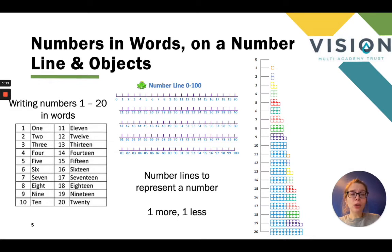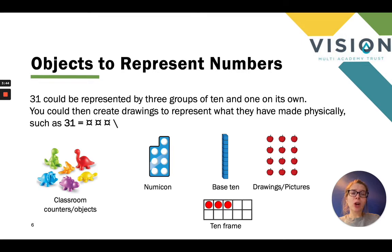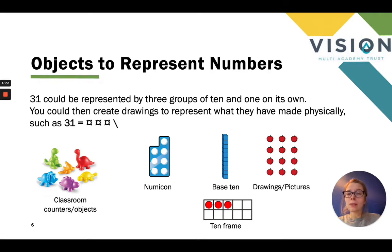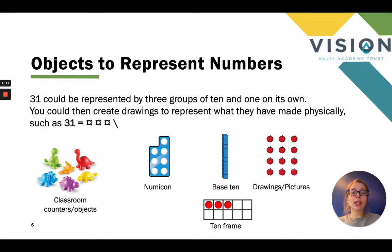I've also put the Numicon number line because it's important that children can see numbers as objects as well — the concrete or pictorial representations of numbers. When looking at objects representing numbers, it's important that you show children that many different objects can be used to represent numbers. For example, 31 can be represented as 31 individual ones, or as three groups of 10 and one on its own. You could then create drawings to represent what they've made physically using counters, cubes or pencils in class.